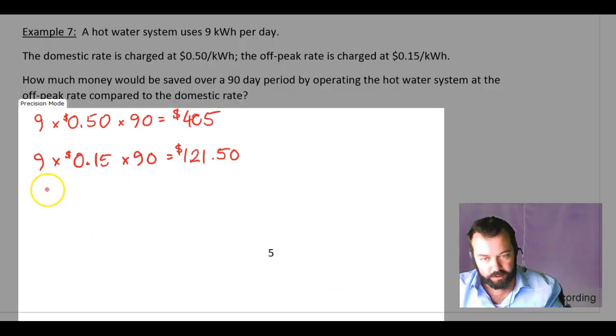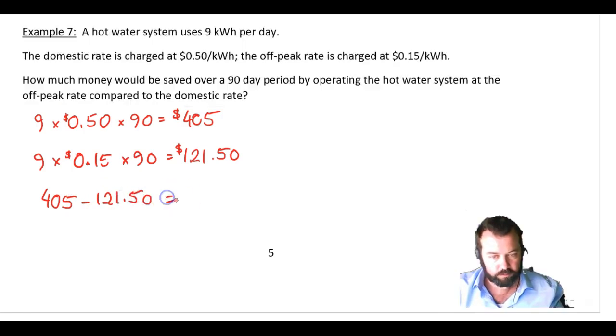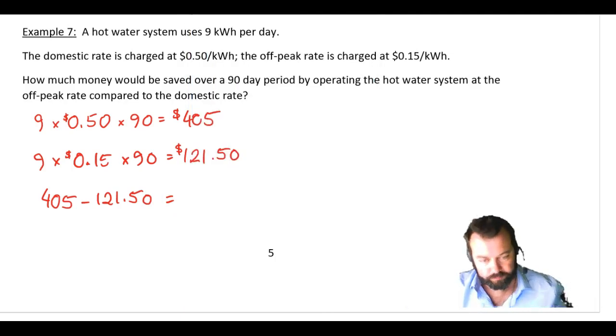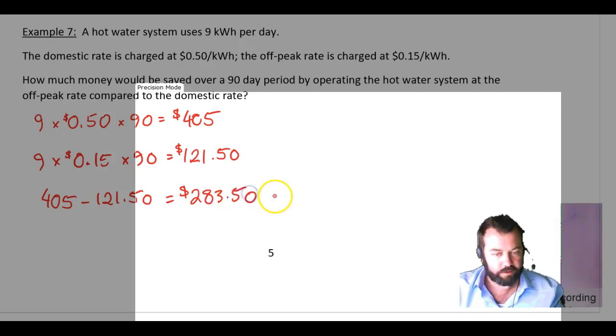We better write that down. Any calculation that you're doing you should write down on your page. And you know what? I forgot the answer. $283.50. $283.50 saved.